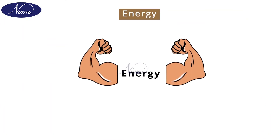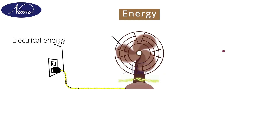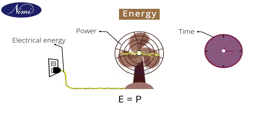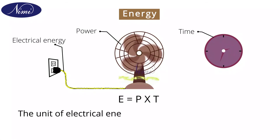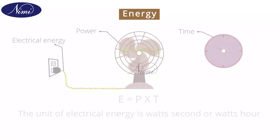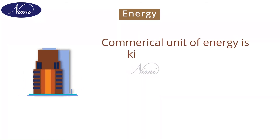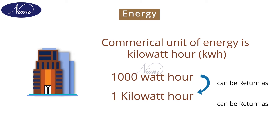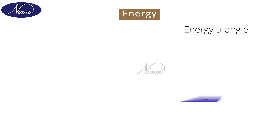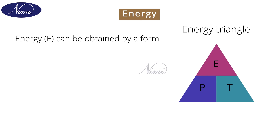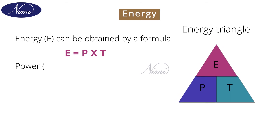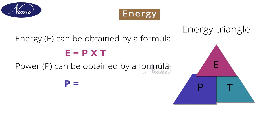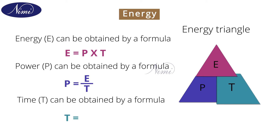Next we are going to see about energy. Energy is an ability to do work, and electrical energy is a product of power and time, that is E is equal to P into T. The unit of electrical energy is watt-second or watt-hour. The commercial unit of electrical energy is kilowatt-hour. 1000 watt-hours can be written as 1 kilowatt-hour, and 1 kilowatt-hour can be written as 1 unit. From the energy triangle, energy E is obtained by E = P × T, power P is obtained by P = E ÷ T, and time T is obtained by T = E ÷ P.